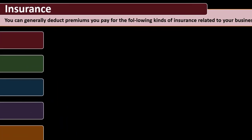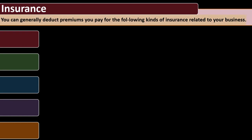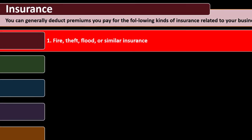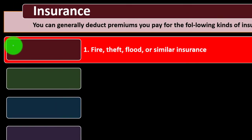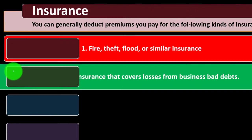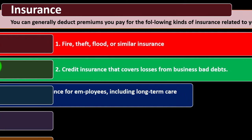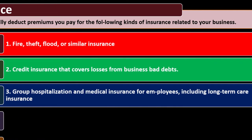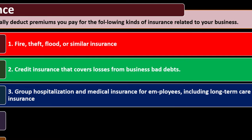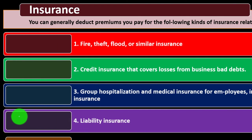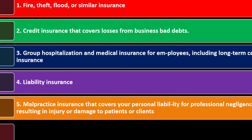You can generally deduct premiums you pay for the following kinds of insurance related to your business. Number 1: fire, theft, flood, or similar types of insurance. Number 2: credit insurance that covers losses from business bad debt. Number 3: group hospitalization and medical insurance for employees, including long-term care insurance. Number 4: liability insurance.